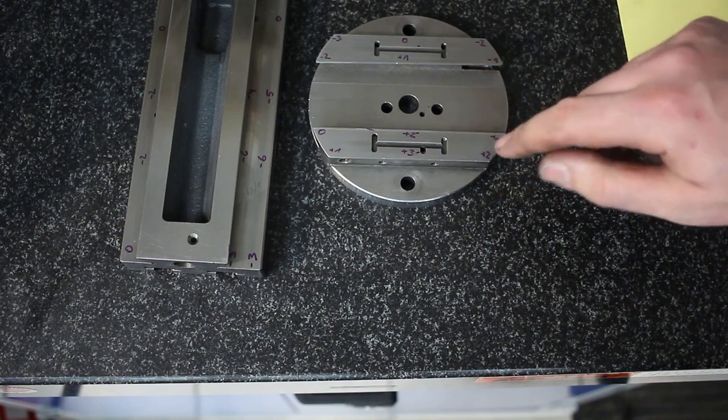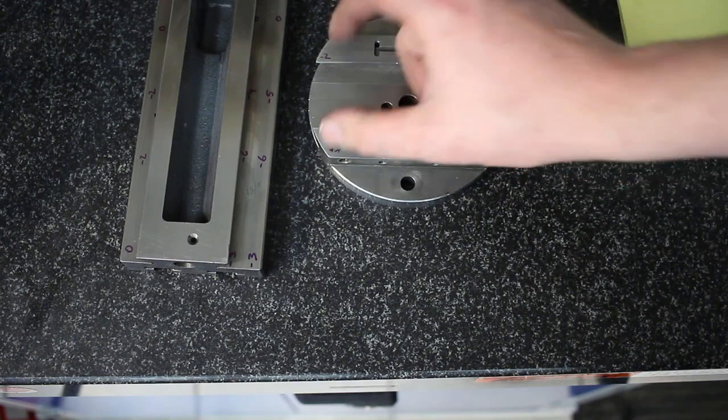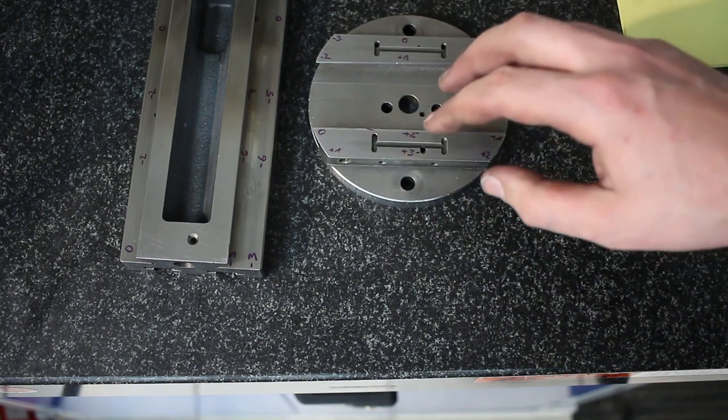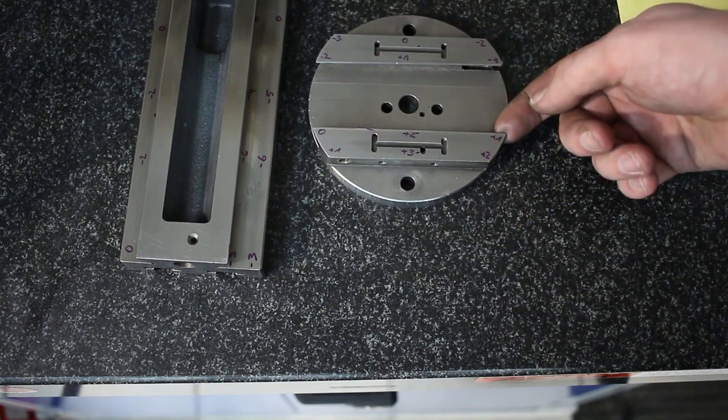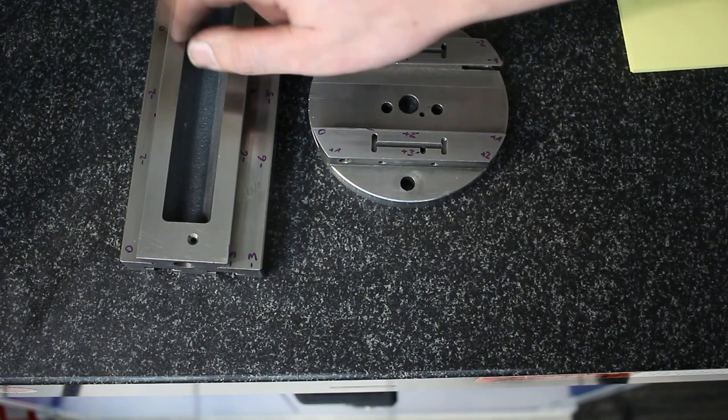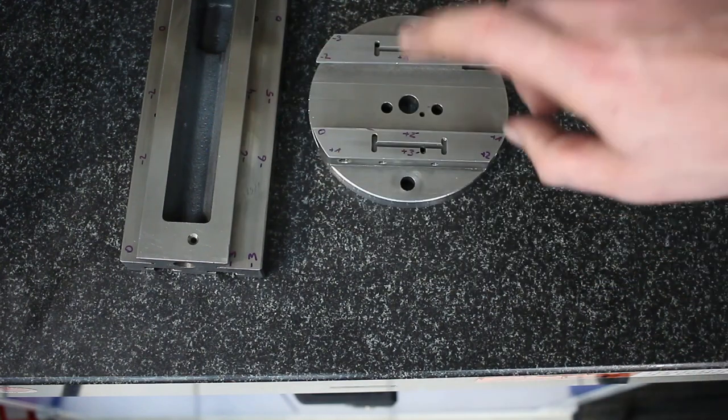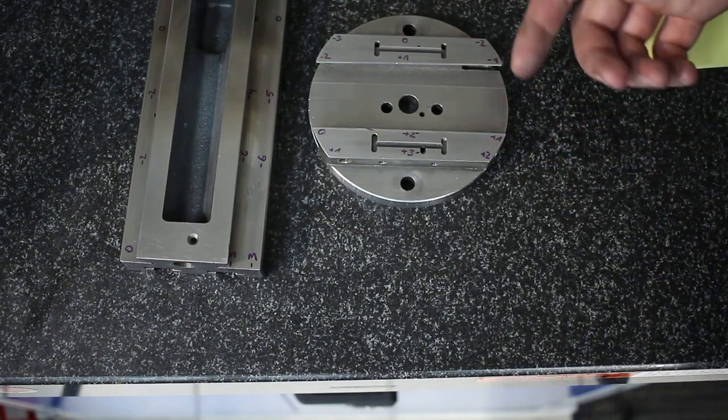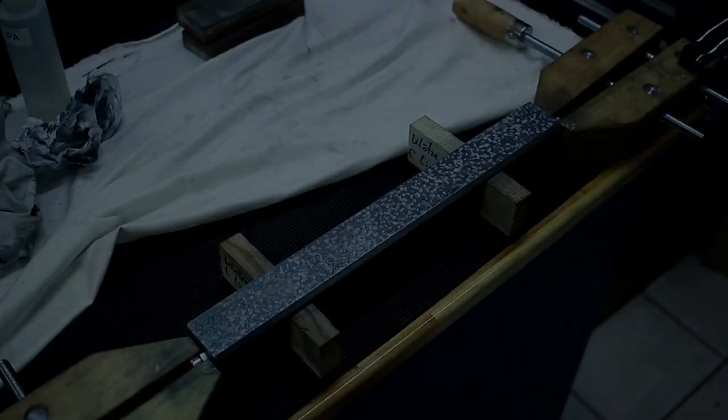That means we scrape one side parallel, for example, to one of the T-slots or to the outside. I have to check which is accurate. Then we scrape the second side parallel to the first one. Then we take the lower part, we scrape the flat part, or in this case surface grind the flat part and just scrape it for bearing and match fit one side of the dovetail to the longer slide. We use this as a master for this. And then we have to fit the gib into it.